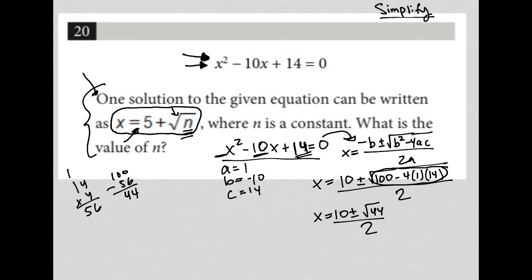We're getting closer, but our question tells us that we want to have something in the x equals 5 plus root n, like that's how we want our answer to look. We're getting closer but we're not quite there.